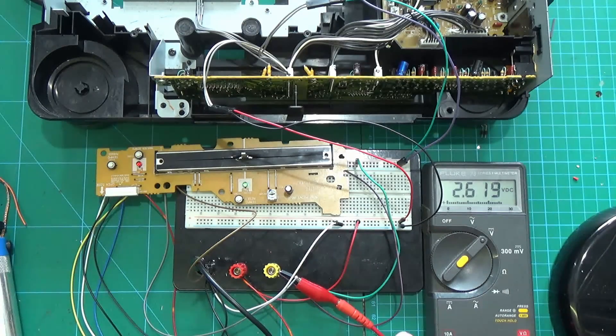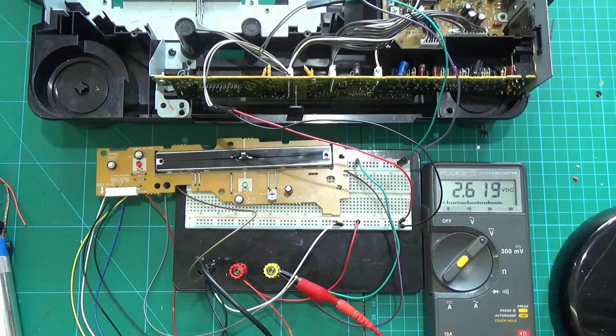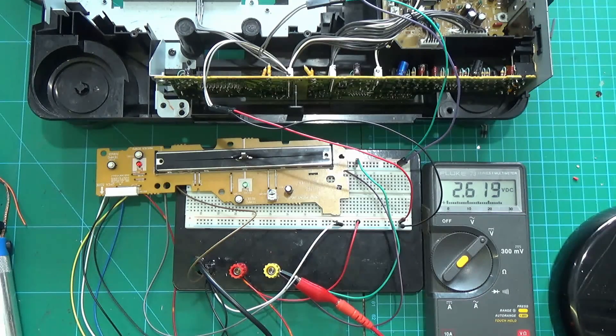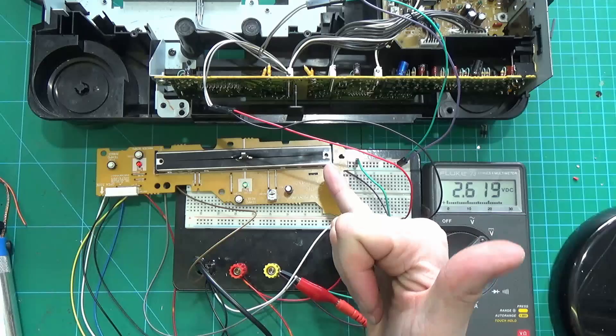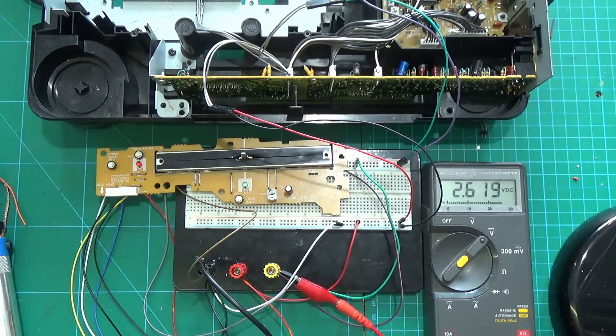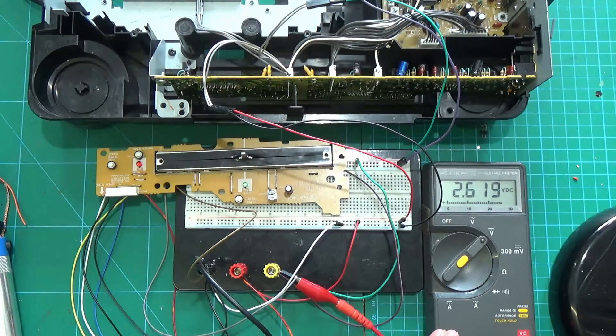So actually on the Teensy we only have 3.3 volt, so we use the 3.3 from the Teensy, we use the analog ground for the swipe, and then we use an analog input pin to read the actual slider position.